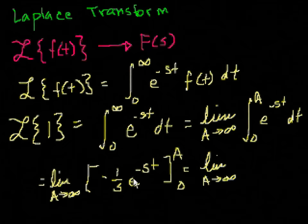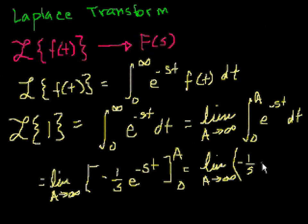So this is equal to the limit as a approaches infinity. OK, if we substitute a in here first, we get minus 1 over s. Remember, we're dealing with t. We took the integral with respect to t. e to the minus s a, right? That's what happens when I put a in here, minus.